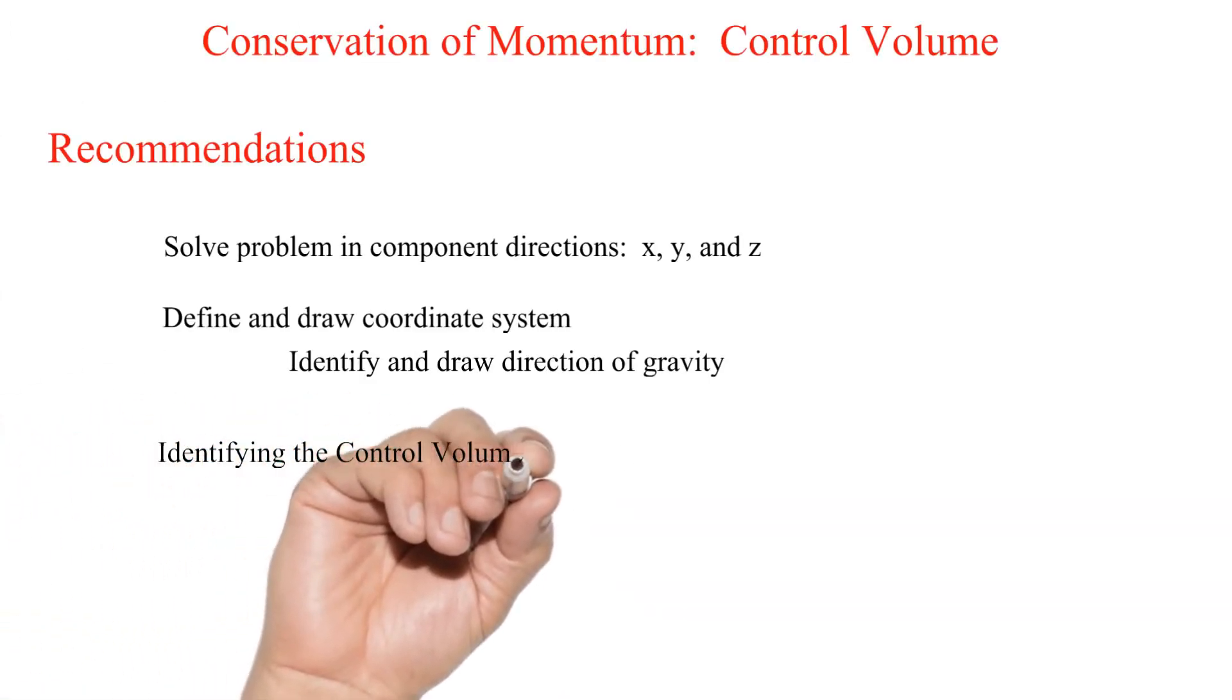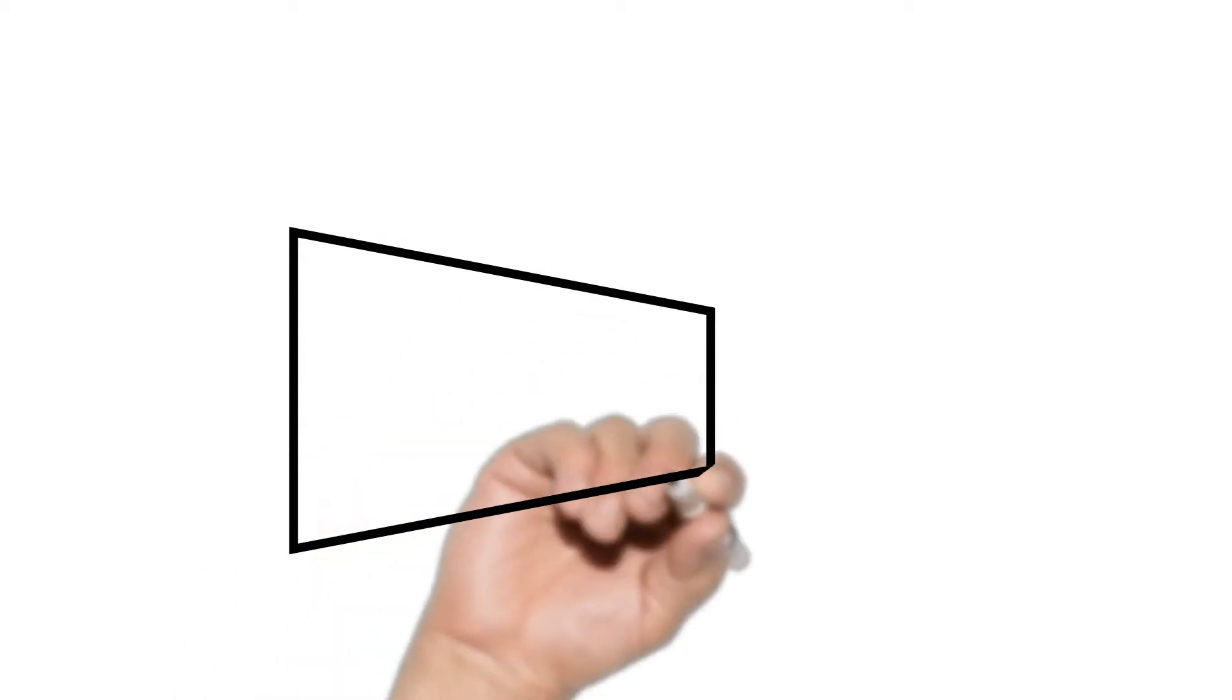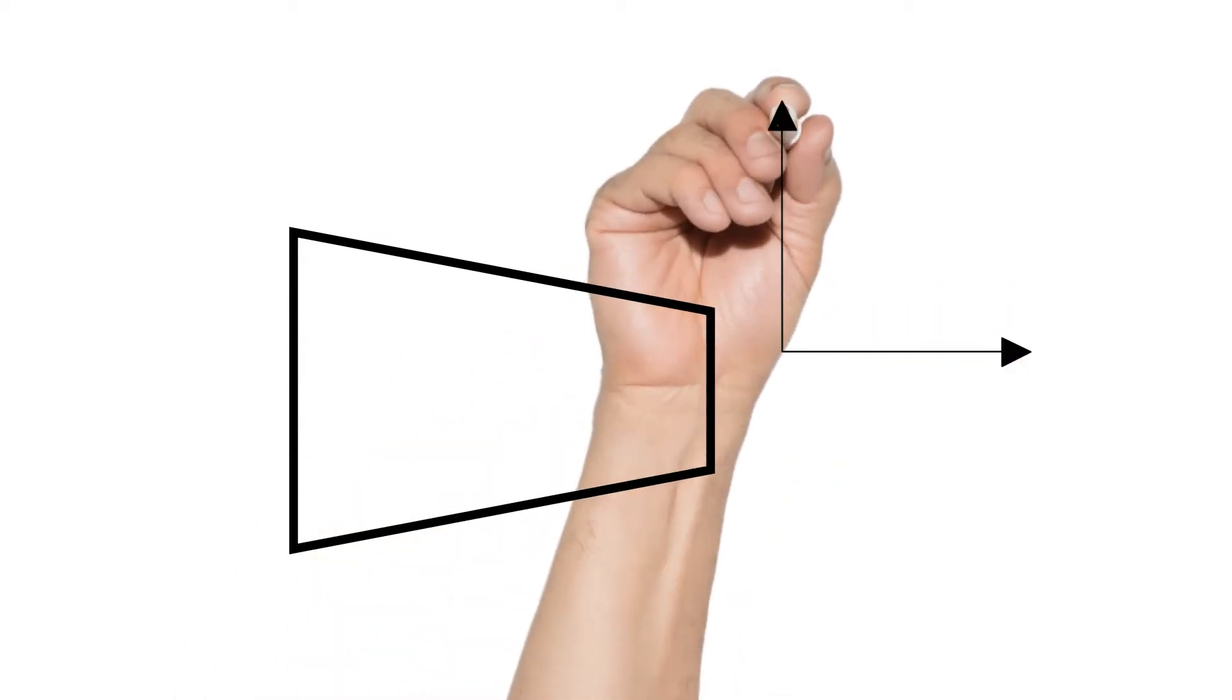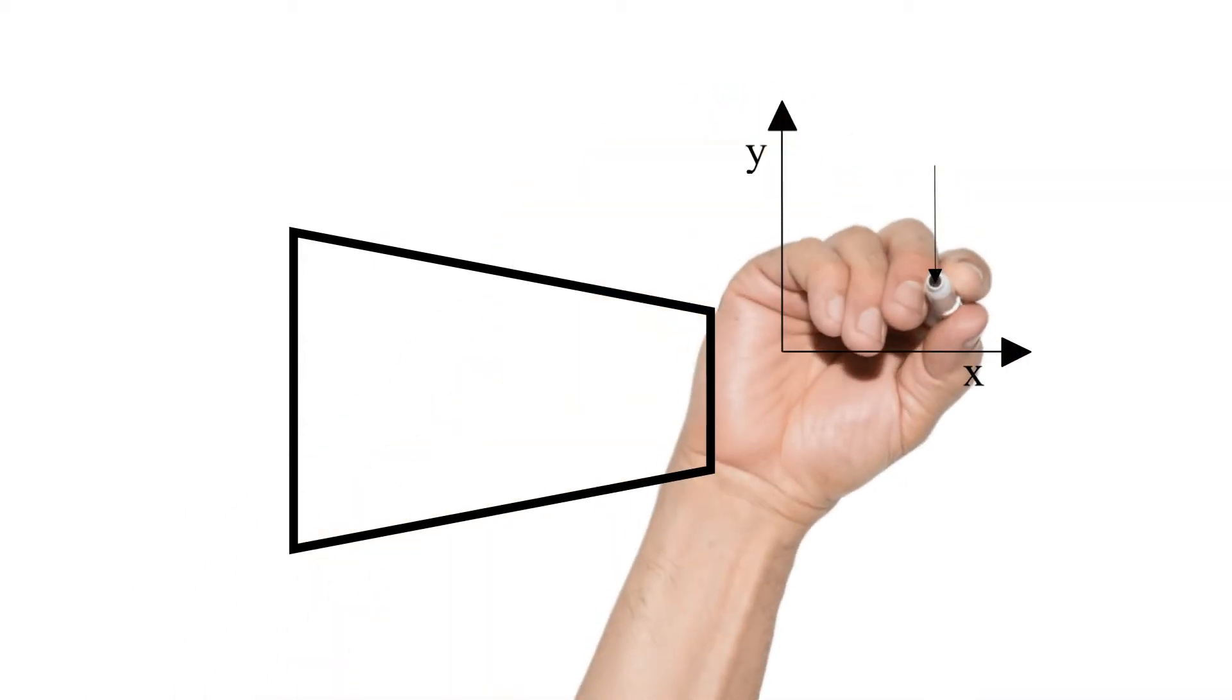Let's get some practice by setting up the control volume to find the support forces necessary to hold this pipe reducer in place.